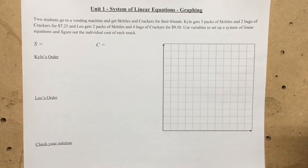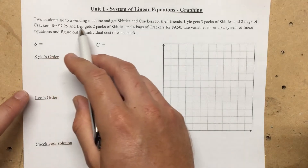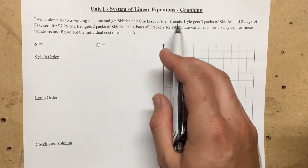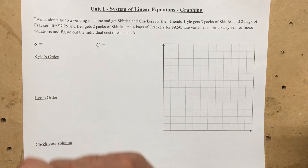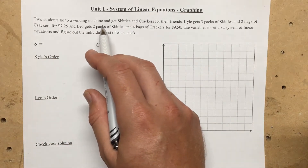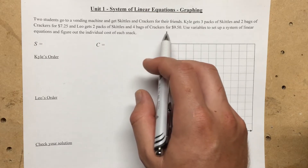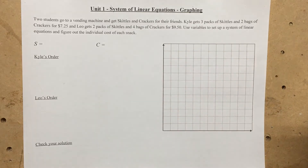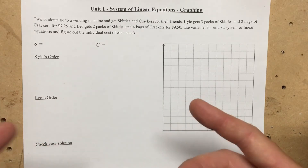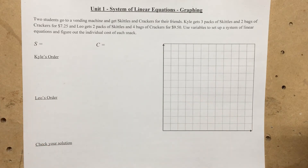This is about two students getting some snacks from a vending machine. Two students go to a vending machine and get skittles and crackers for their friends. Kyle gets three packs of skittles and two bags of crackers for seven dollars and twenty-five cents. Leo gets two packs of skittles and four bags of crackers for nine dollars and fifty cents. Use variables to set up a system of linear equations and figure out the individual cost of each snack — how much one pack of skittles and one package of crackers costs.